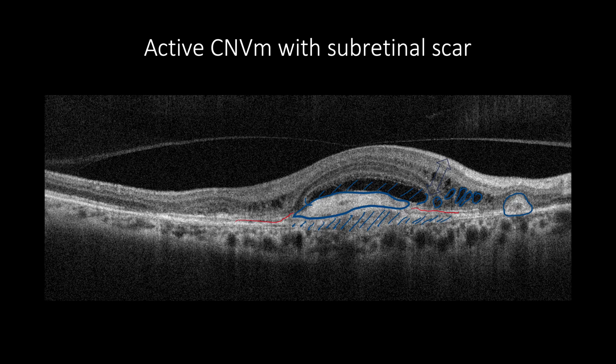OCT can help determine if treatment is warranted, especially by assessing the integrity of the central outer retinal layers, beneficial vision, and status of the fellow eye. In contrast, this case shows total disruption of the central ellipsoid zone and external limiting membrane, and best-corrected visual acuity is counting fingers at close range.